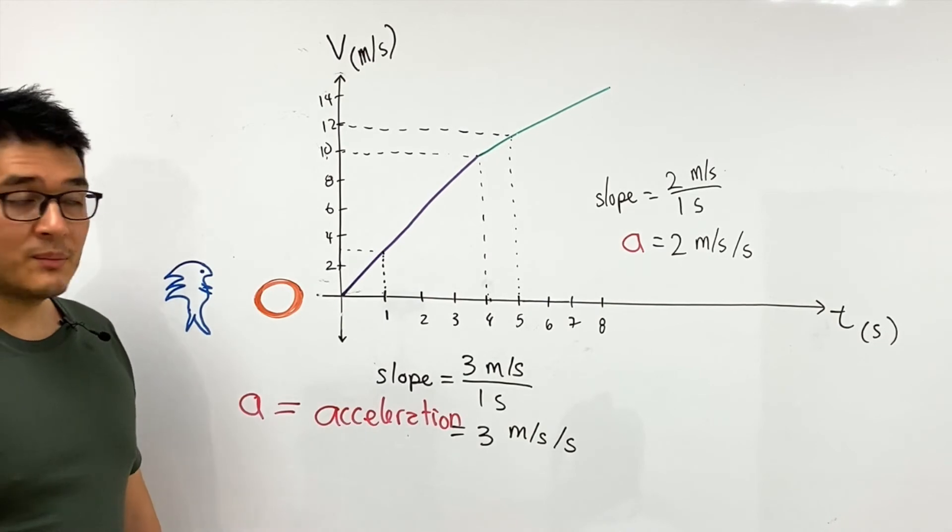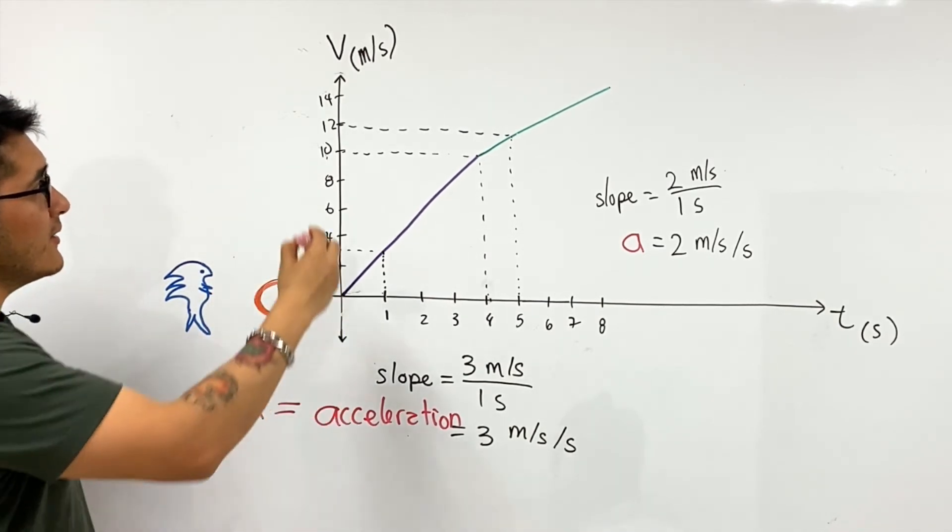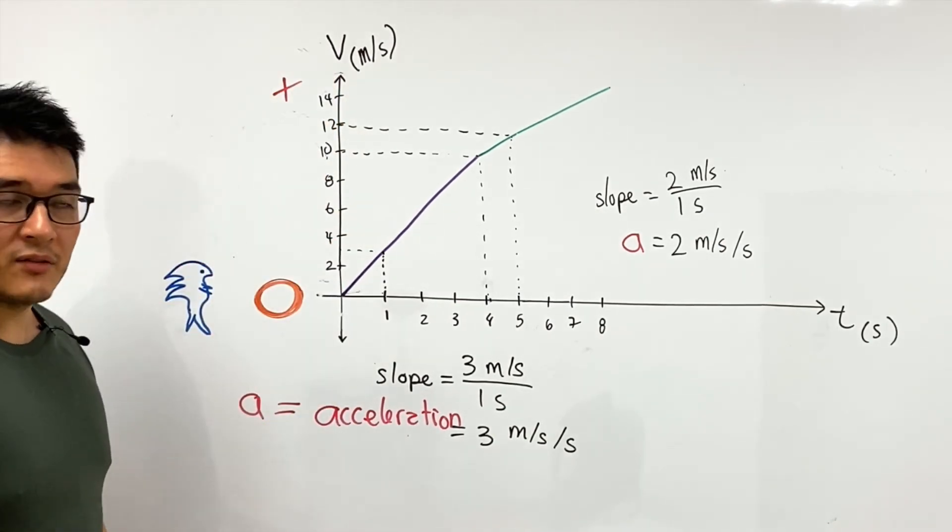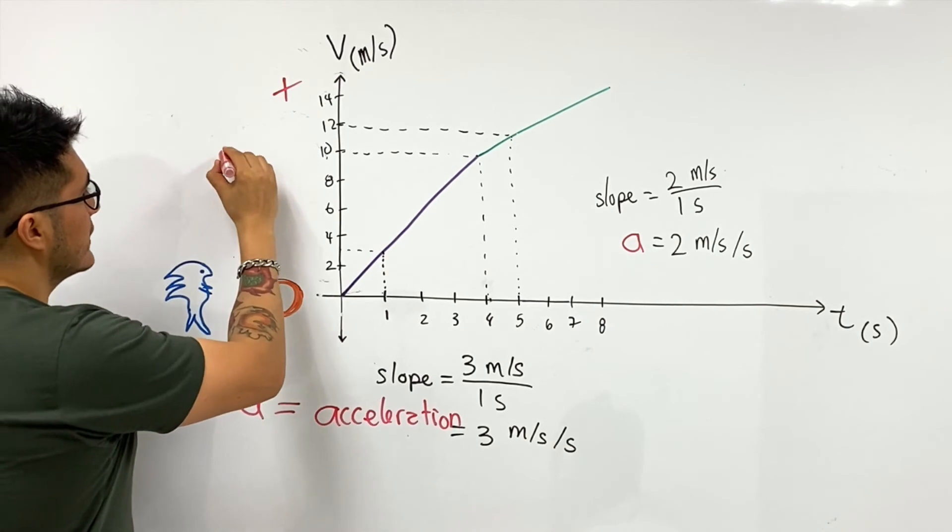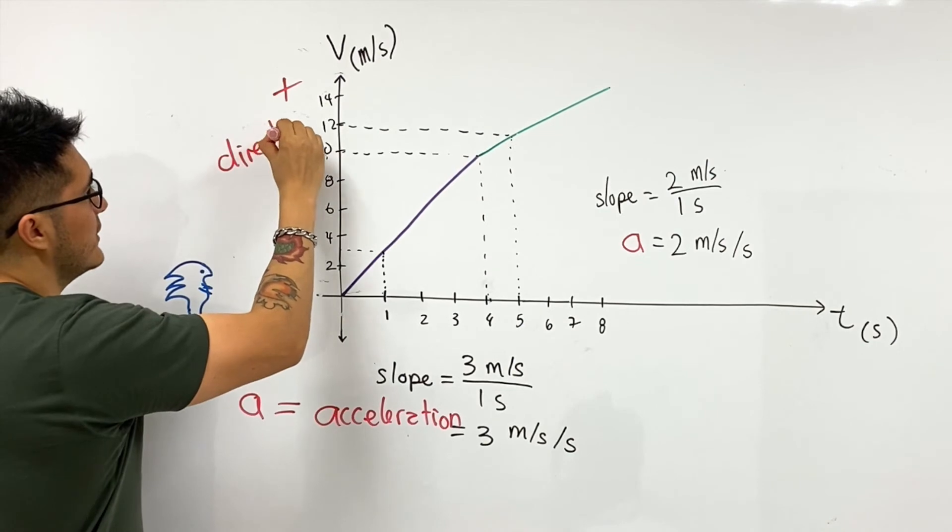And in which direction of motion is he moving? Well what did we say before? Whenever you have velocity being positive, that also indicates the direction of motion. So whenever velocity is positive you're moving in the positive direction as well.